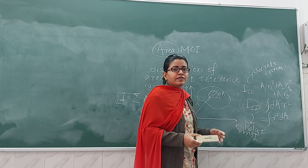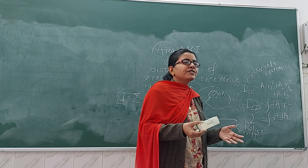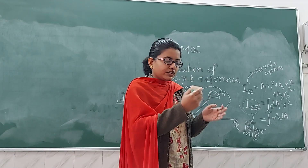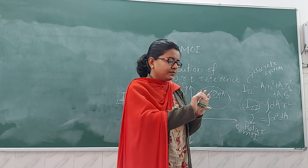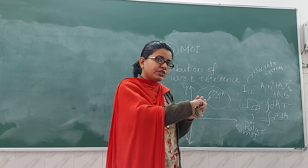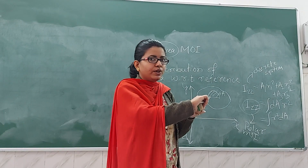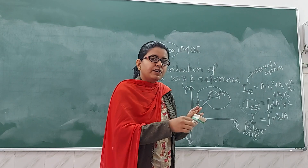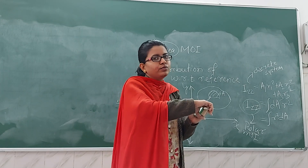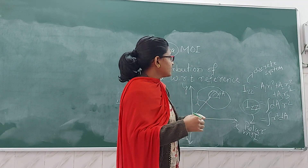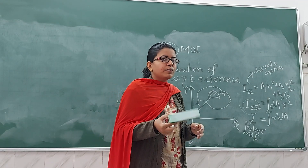The polar moment of inertia has significance in the case of shafts. Suppose a shaft is fixed at one end and a twisting moment is applied. If the polar moment of inertia is high, the shaft will not get twisted. If its polar moment of inertia — that is, its moment of inertia about the Z axis — is low, then the shaft will get twisted. With this we shall close today's session. In the next video we shall discuss about mass moment of inertia. Thank you.